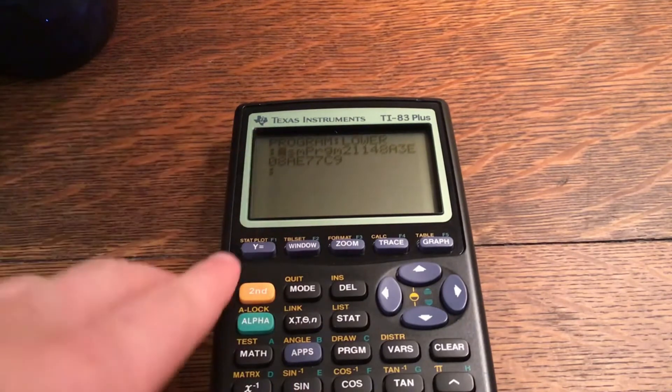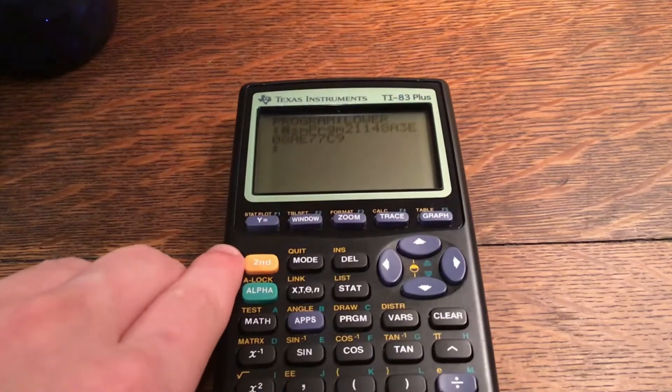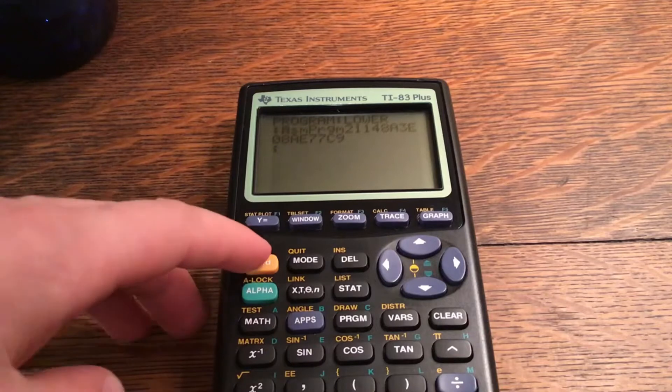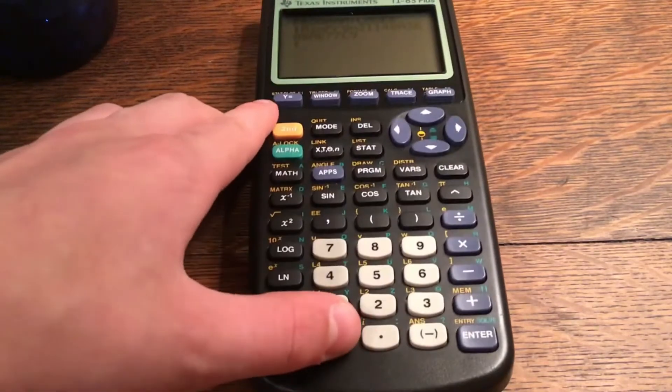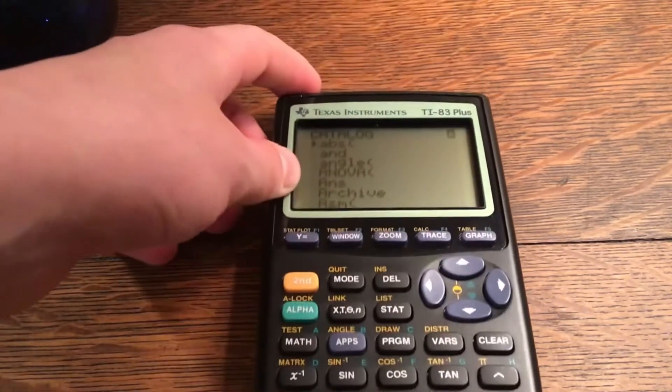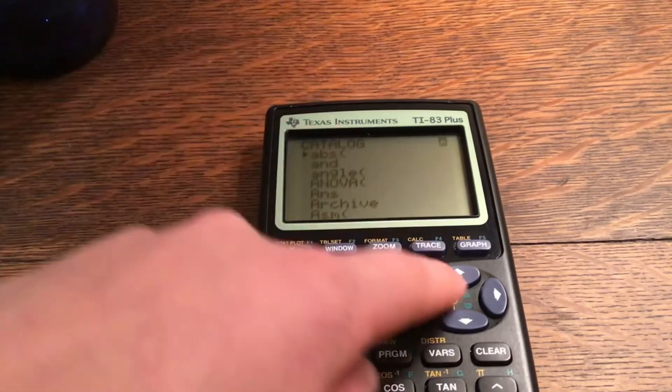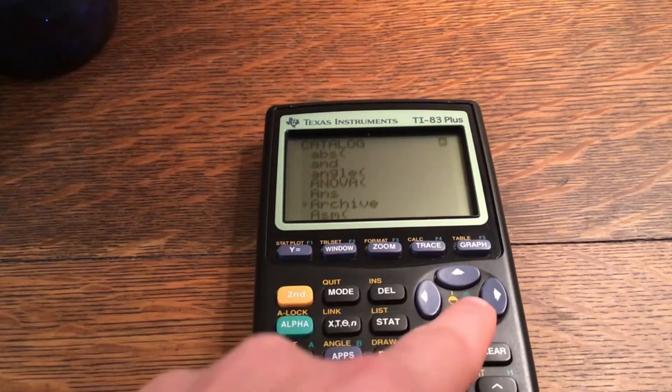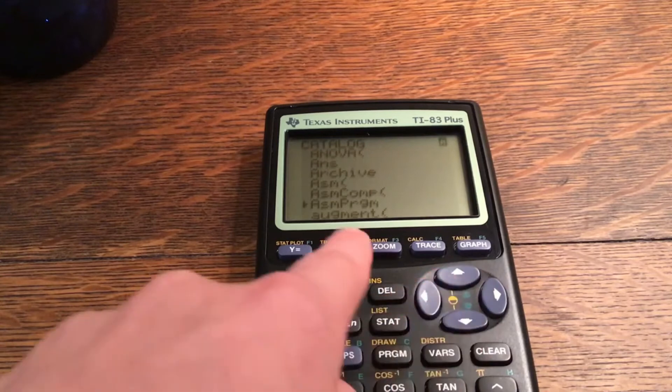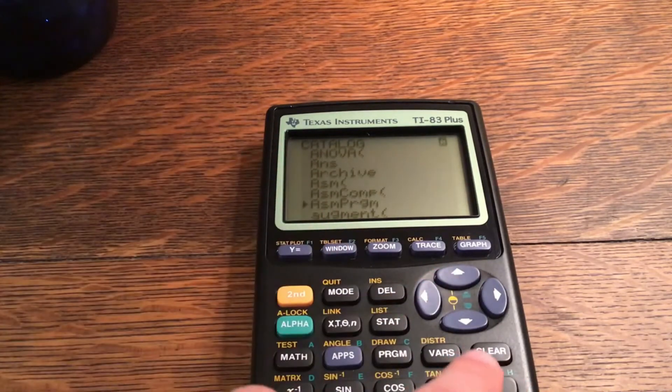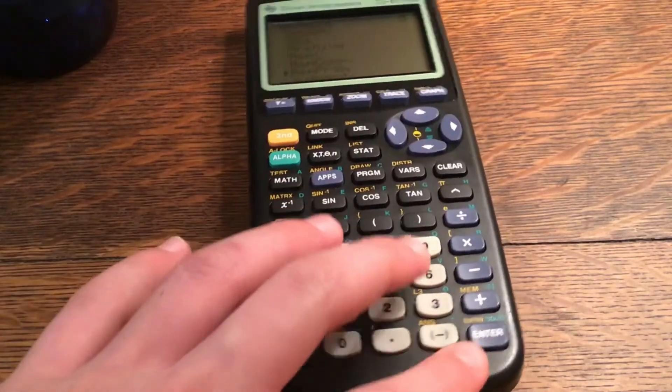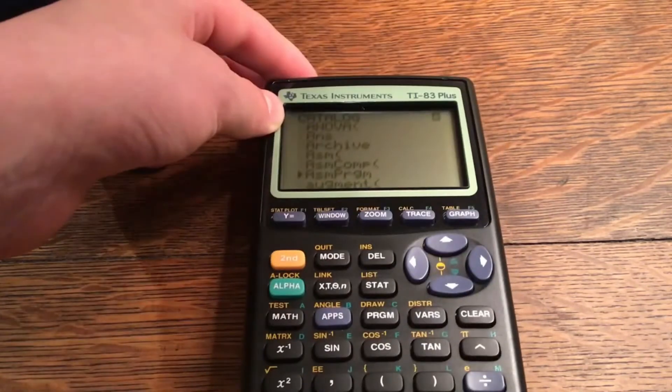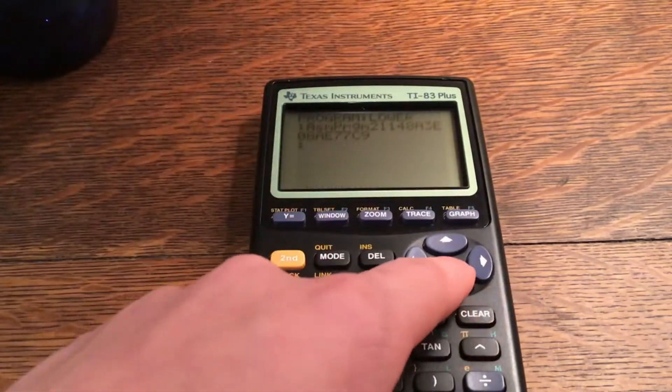The first thing you have to do is ASM program. To find that, you go second zero, which is catalog. You're already in the A's because it's the first letter of the alphabet, and then you scroll down until you find ASM program. Then you would click enter, but I already have it, so I'm going to click clear to get out of it.